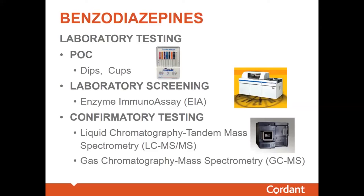A presumptive positive on a point-of-care device should always be confirmed by a confirmatory test. For laboratory screening — testing that's performed in the laboratory, like at Cordant — we use enzyme immunoassay to test for the benzodiazepines, the EIA method, and these are run on large automated clinical chemistry analyzers.